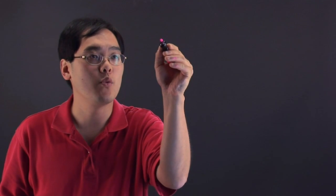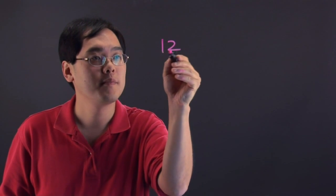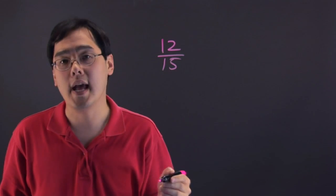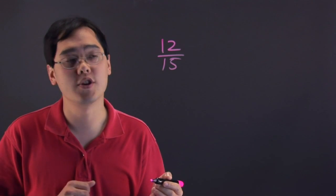So, let's run over some examples and you'll see where we're coming from. Now, one fraction, for example, that we can look at is 12 fifteenths. Now, as you might imagine, it's pretty easy to reduce this fraction,